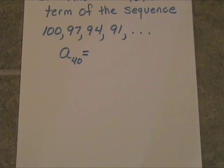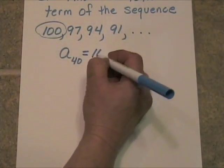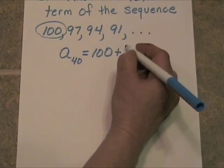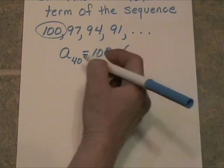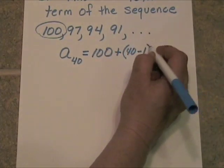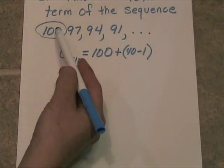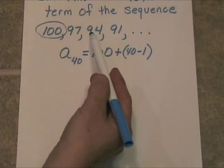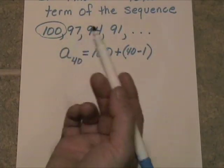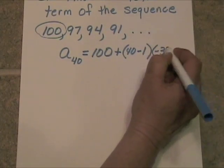All we need is our initial condition. We're starting at 100. So we have 100 plus the quantity (n - 1). Well, n is 40, so it would be 40 minus 1 times the difference here. Now what's happening? In each case, we're getting 3 less and 3 less and 3 less, so we're adding a negative 3, or subtracting 3 if you will. I'm going to write that as negative 3.